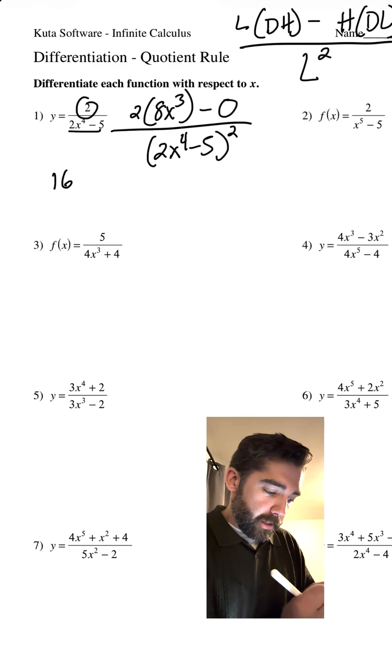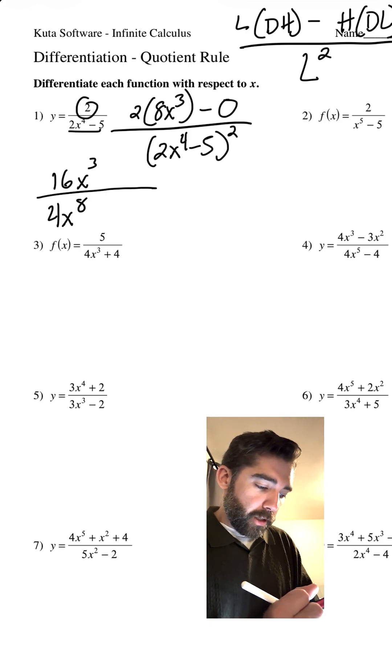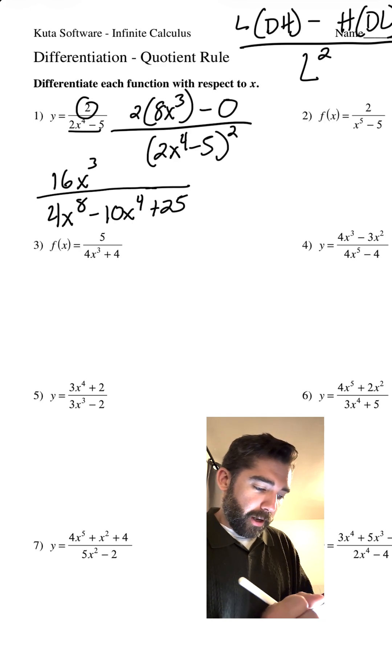This is 16. 2 times 8 is 16x cubed. All over, when we square this, we get 4x to the eighth power minus 10x to the fourth power plus 25.